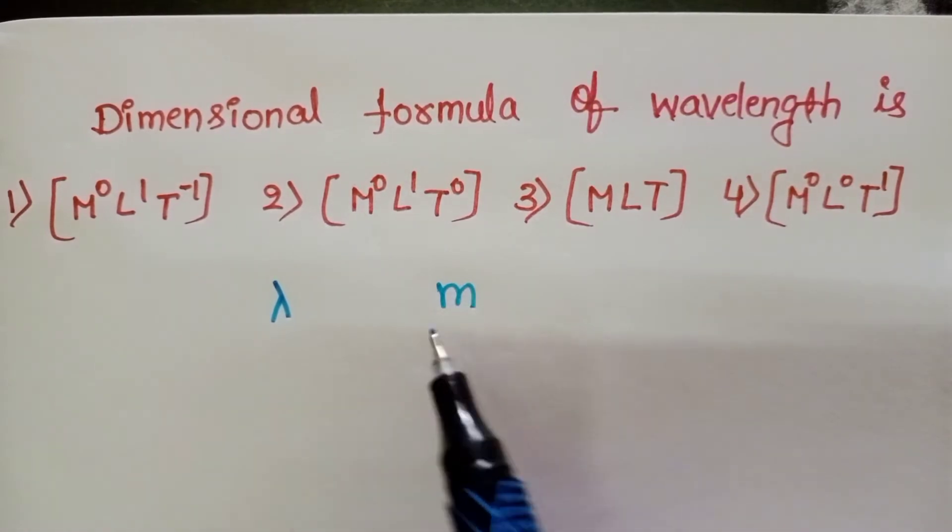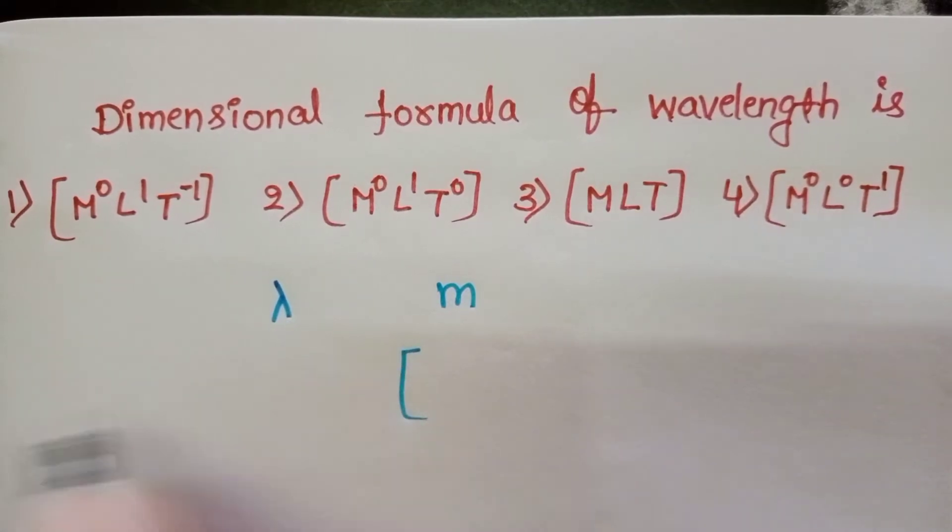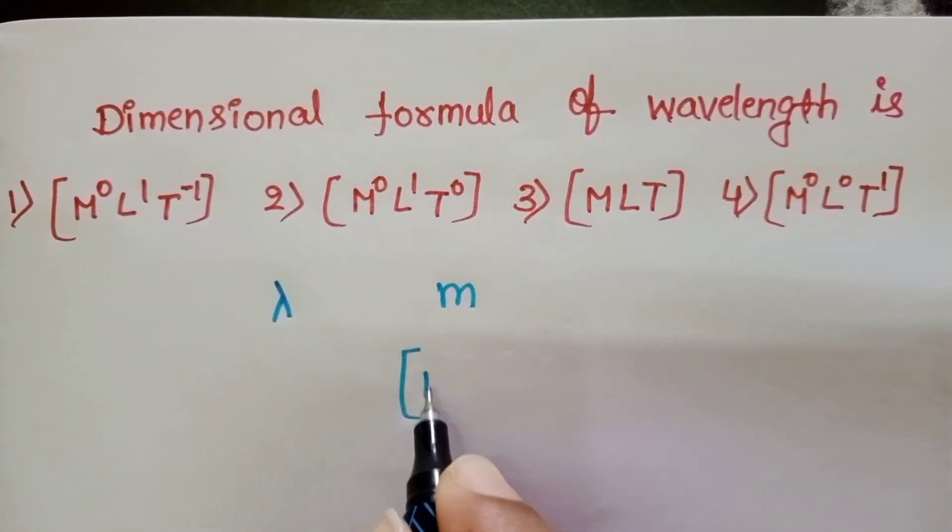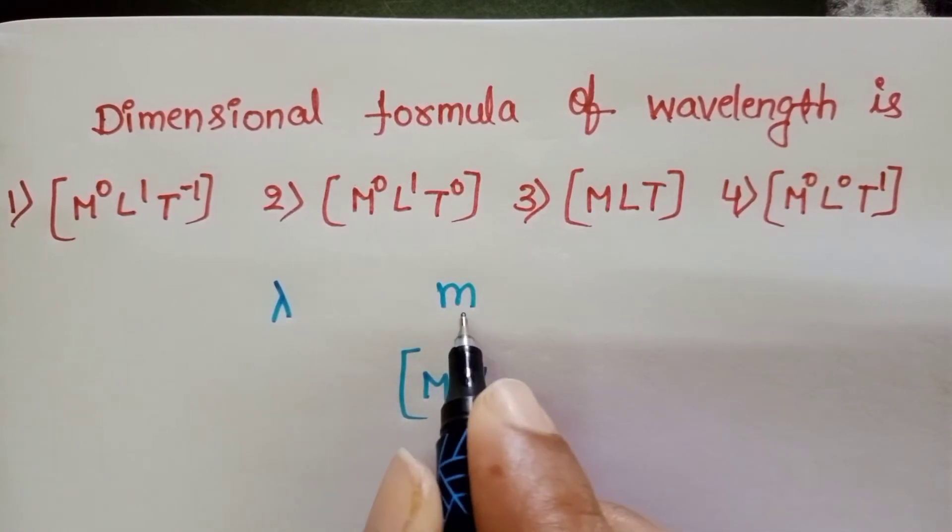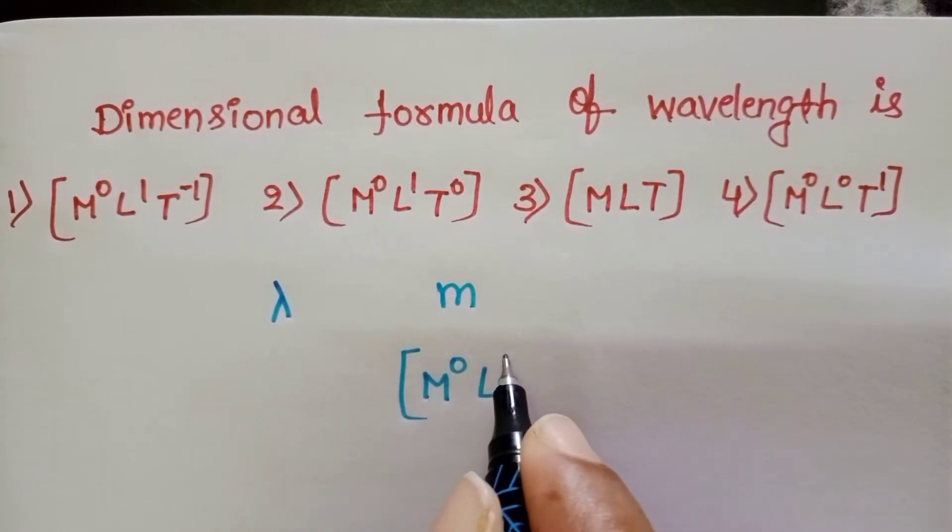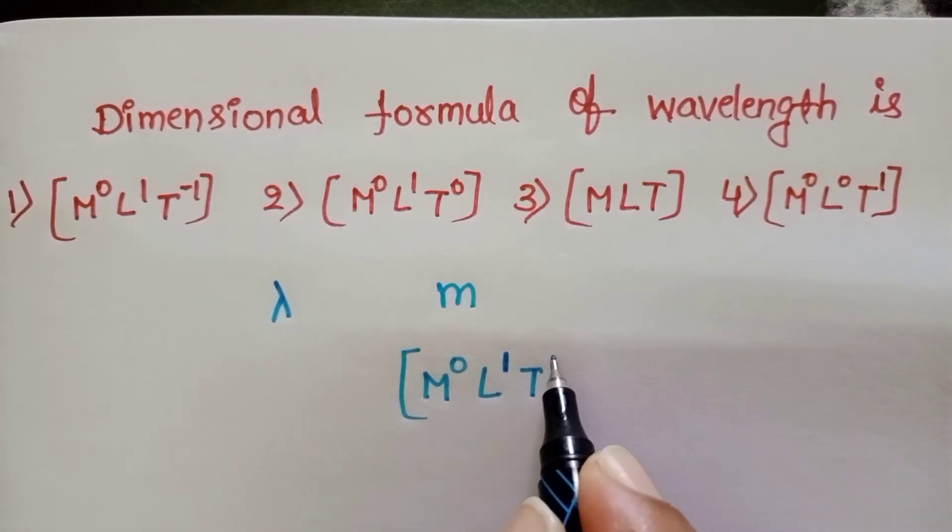So, wavelength has the dimension of length only. The dimensional formula of wavelength is: there is no mass, M power 0, the length is only 1, L power 1, T power 0.